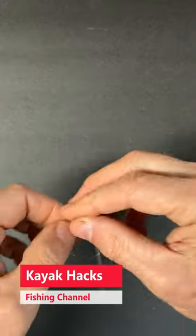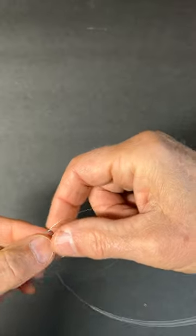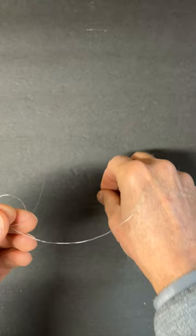Here's the fastest way to tie a loop knot to give your lure some additional good action. First, tie a loose overhead knot.